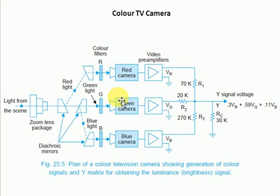Thus the three color signals are generated — these are the red, green, and blue signals. Simultaneous scanning of the three camera tubes is accomplished by a master deflection oscillator and synchronous generator which drives all three tubes. The three video signals produced by the camera represent the three primaries of the color diagram. By selective use of these signals, all colors in the visible spectrum can be reproduced on the screen of the color picture tube.